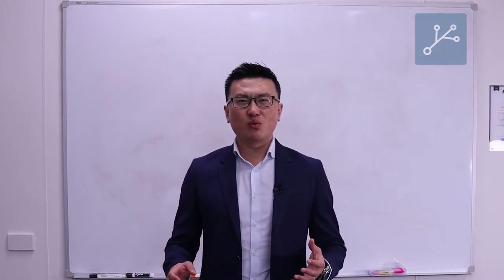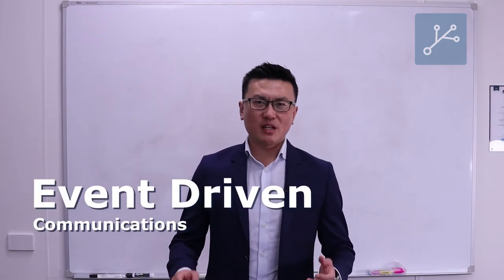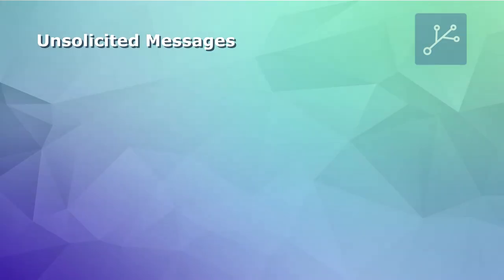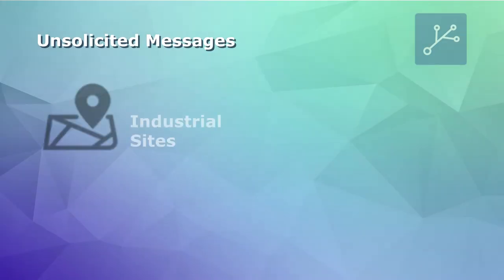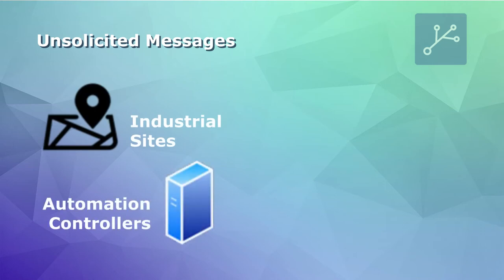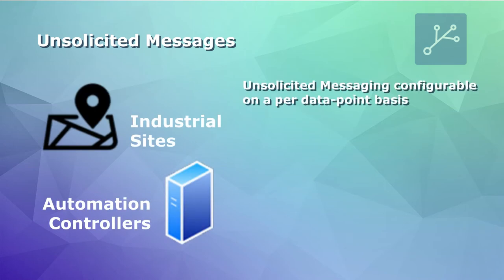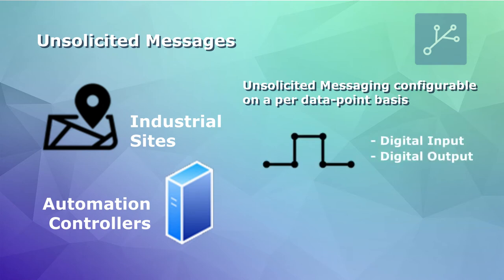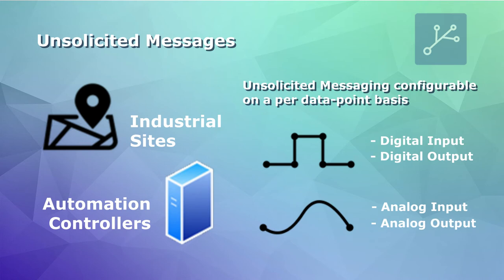People use DNP3 with event-driven communication by configuring unsolicited messages for each site or for each controller. The unsolicited messages can be configured per data points — that is digital input, digital output, analog input, and analog output. It can also be configured for counter objects as well.